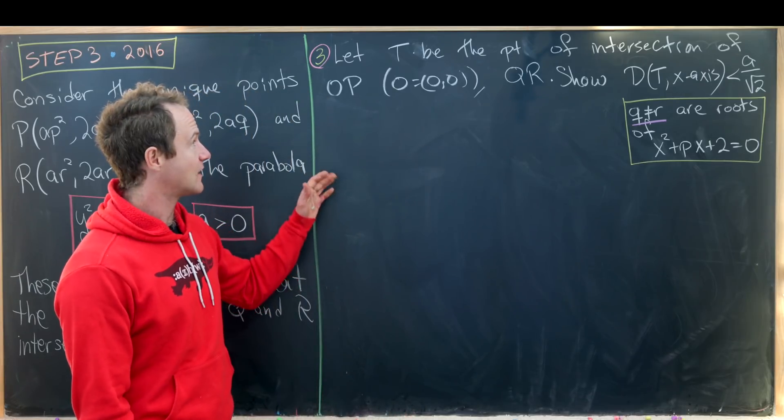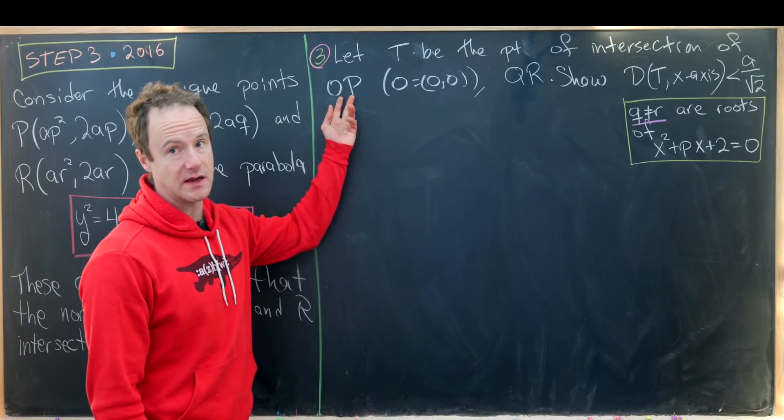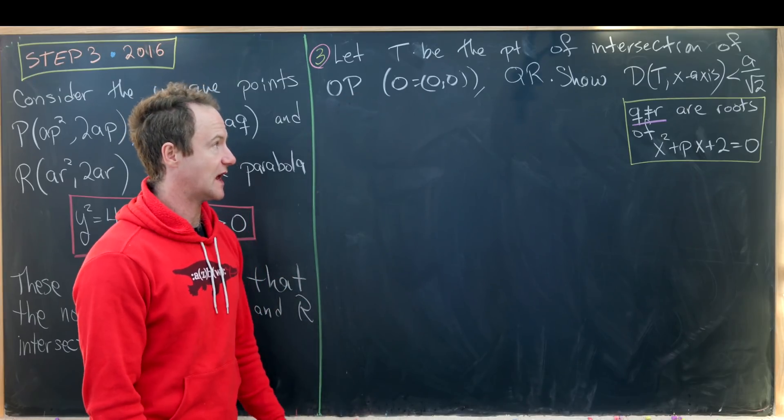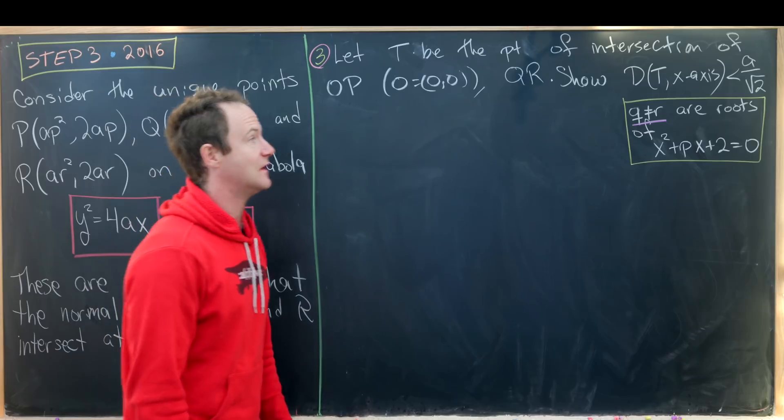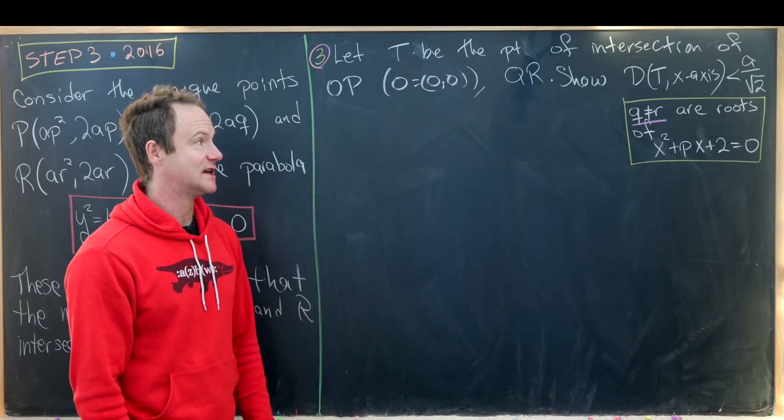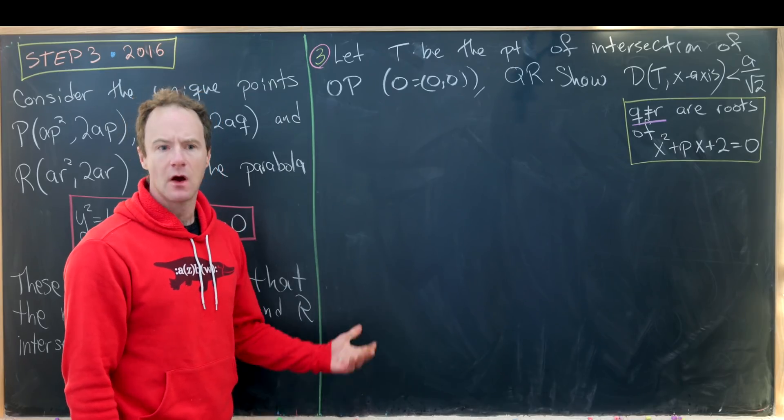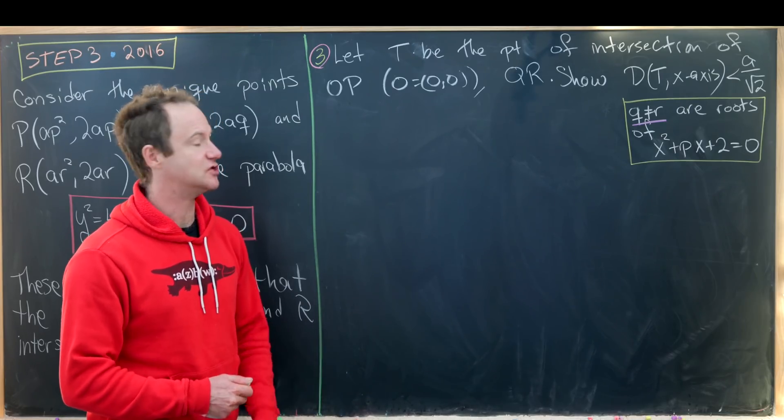Our final goal is to consider T as the point of intersection of OP where O is the origin and QR. And then we want to show that the distance from T to the X axis is less than A/√2.